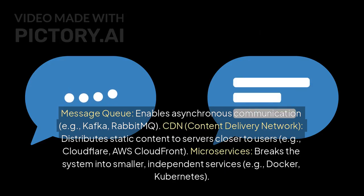Message queue enables asynchronous communication, like Kafka or RabbitMQ. CDN, or content delivery network, distributes static content to servers closer to users, like Cloudflare or AWS CloudFront. Microservices breaks the system into smaller, independent services, like Docker or Kubernetes.